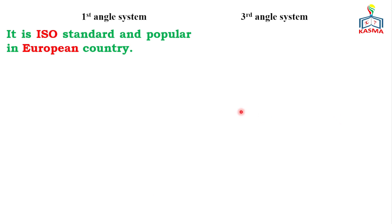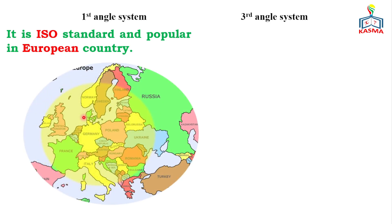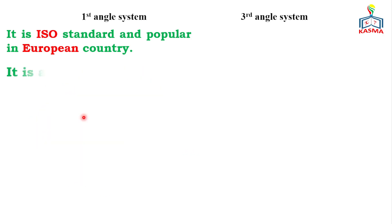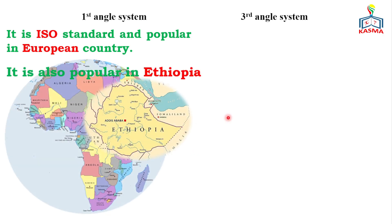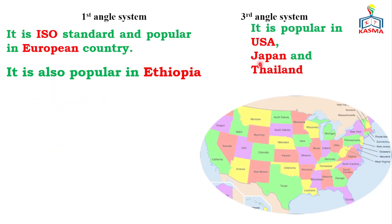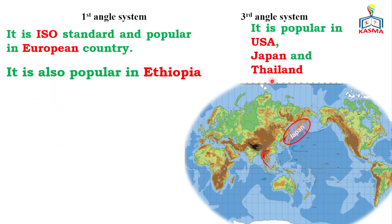First angle projection is the ISO standard and is popular in most European countries as well as in Ethiopia. Third angle projection is popular in the USA, Japan, and Thailand. Different countries follow their own projection system, but the ISO standard is the first angle projection.